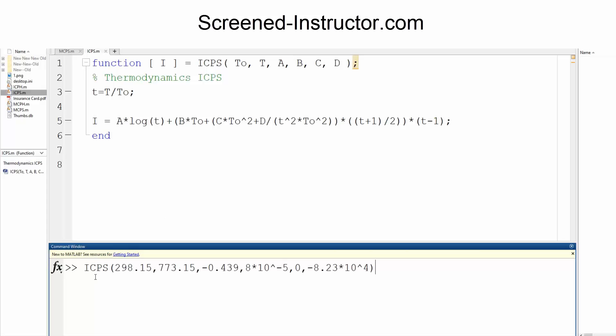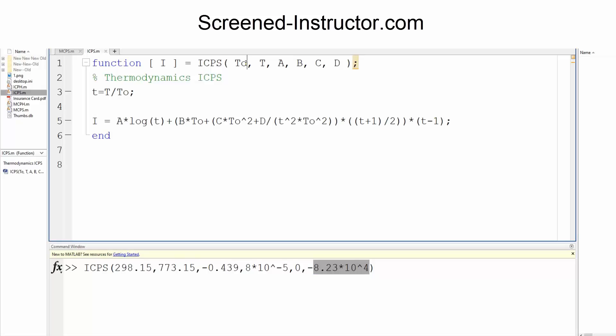So I can say icps, parentheses, this is t0, this is t, this is a, this is b, this is c, and this is d. And the reason it's in this order is because we wrote it down earlier that this is t0, this is t, a, b, c, and d.